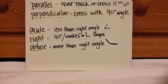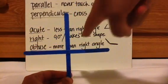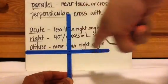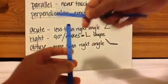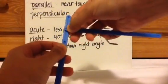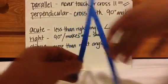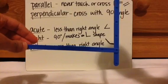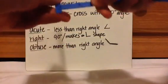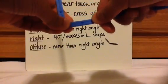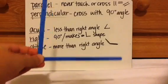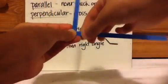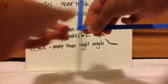Next, we have perpendicular lines. Perpendicular is where lines cross and there's a 90-degree angle. Here's an example of perpendicular — there's your 90-degree angle right there. Perpendicular lines form a right angle, and you just assume that both lines keep going in each direction.